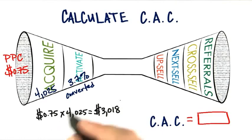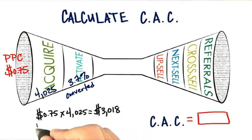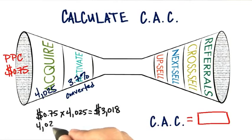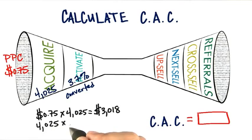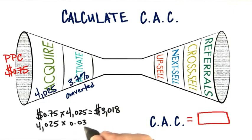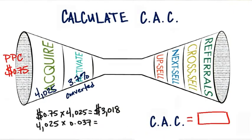Our next important number is that not all 4,025 actually activated. If we look at our conversion number, only 3.7% converted. So if we multiply that out, we'll discover that equals about 149 activated customers.